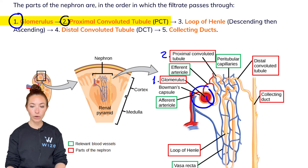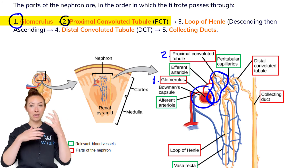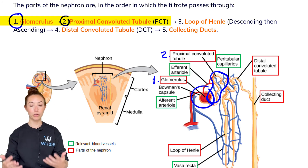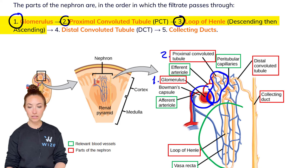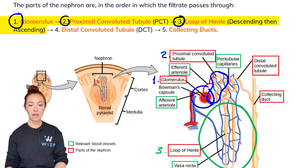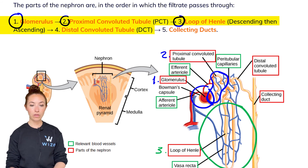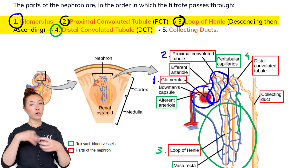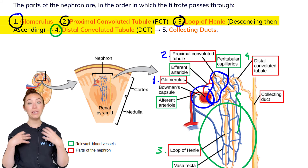From the glomerulus, filtrate enters the PCT — essentially a very convoluted tube, which is why it's called the proximal convoluted tubule. From the PCT, the filtrate goes into the loop of Henle, which has a descending part and an ascending part and has an important function we'll cover. After the loop of Henle, the filtrate goes up into the distal convoluted tubule, or DCT — another convoluted tubule, but further away from the glomerulus.